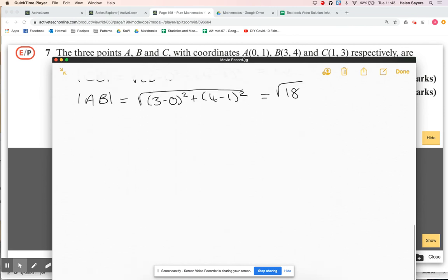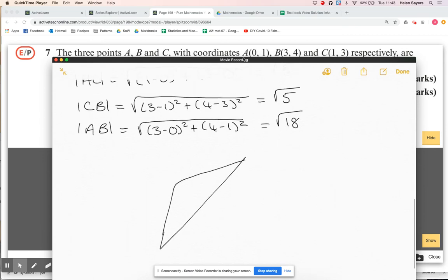Okay, let's just draw the triangle a little bit better now, we've got those, so I had two sides of root five and one side of root 18, and that was the angle I needed.